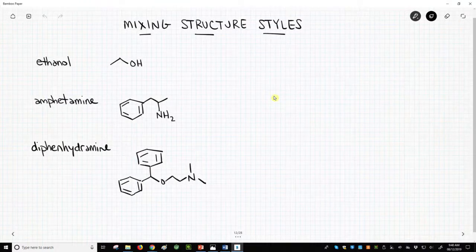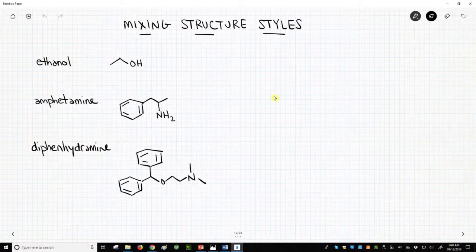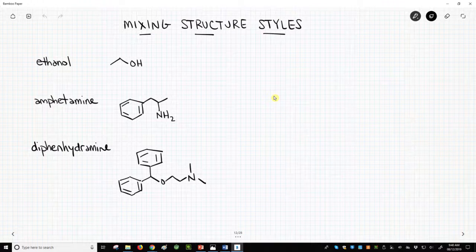We have three molecules on the screen – ethanol, amphetamine, and diphenhydramine. All are shown as pure line-angle structures.